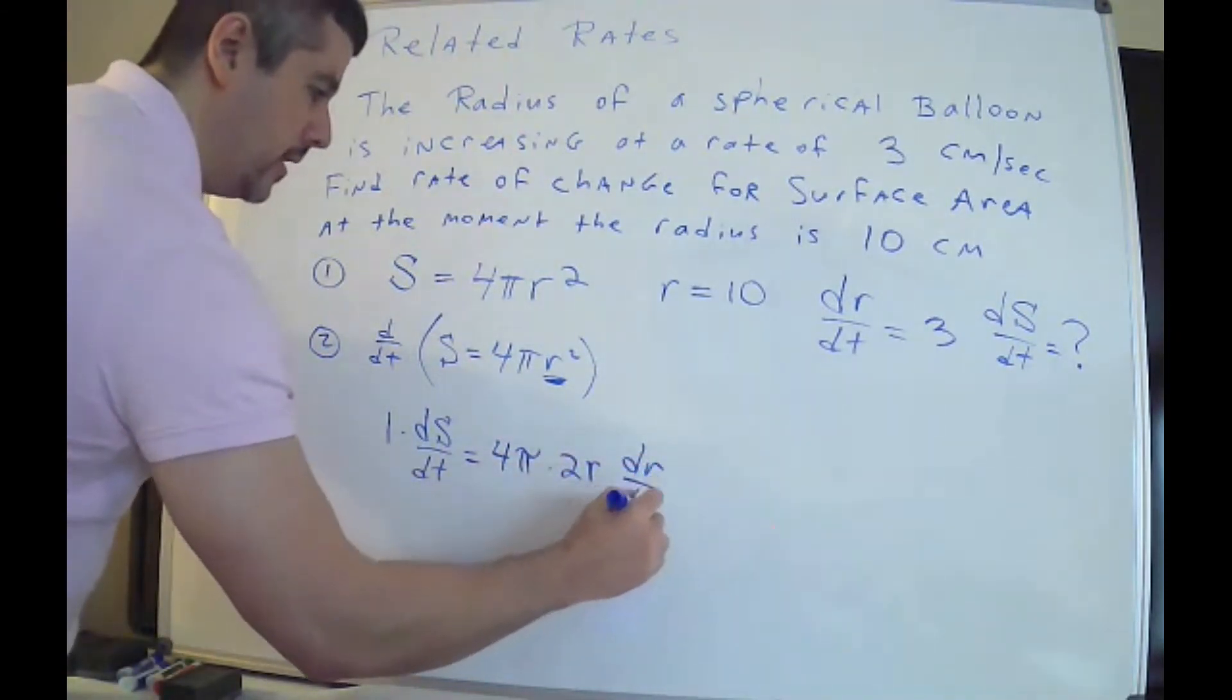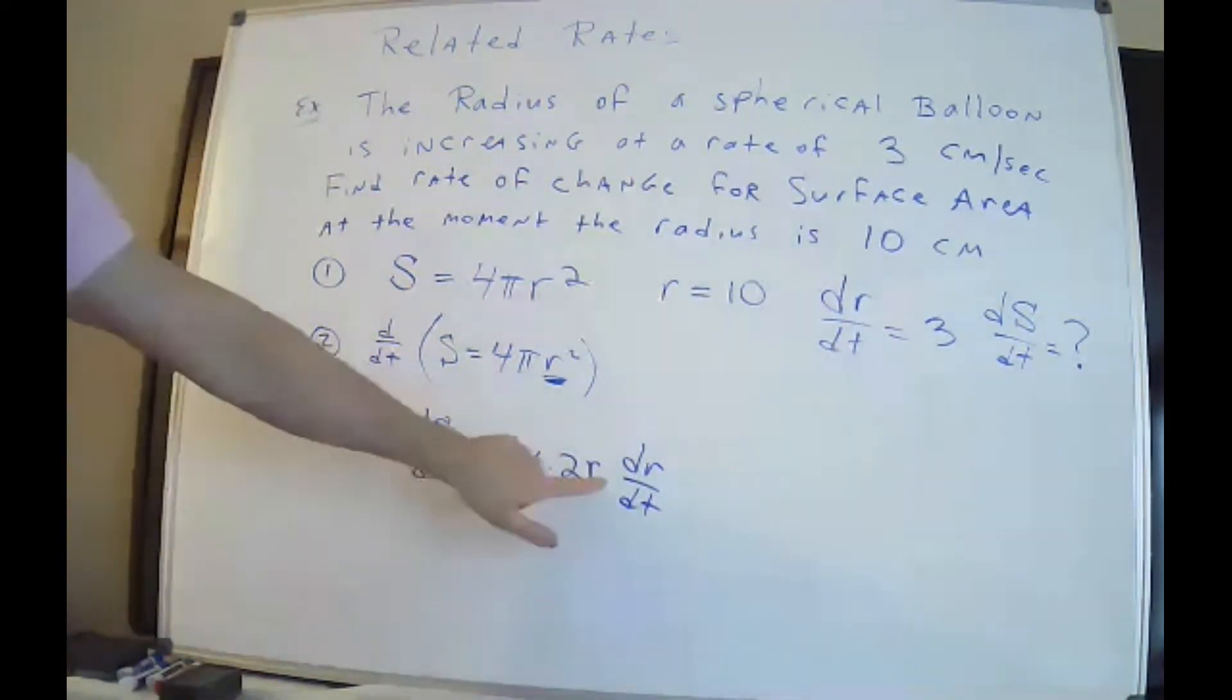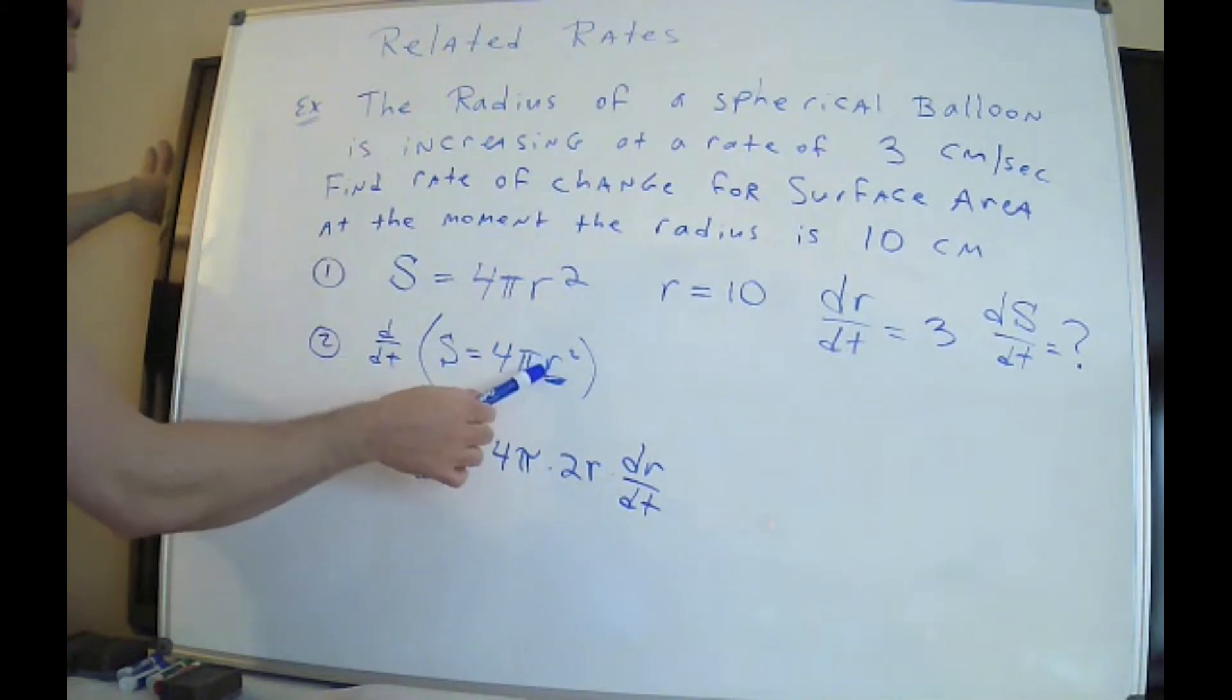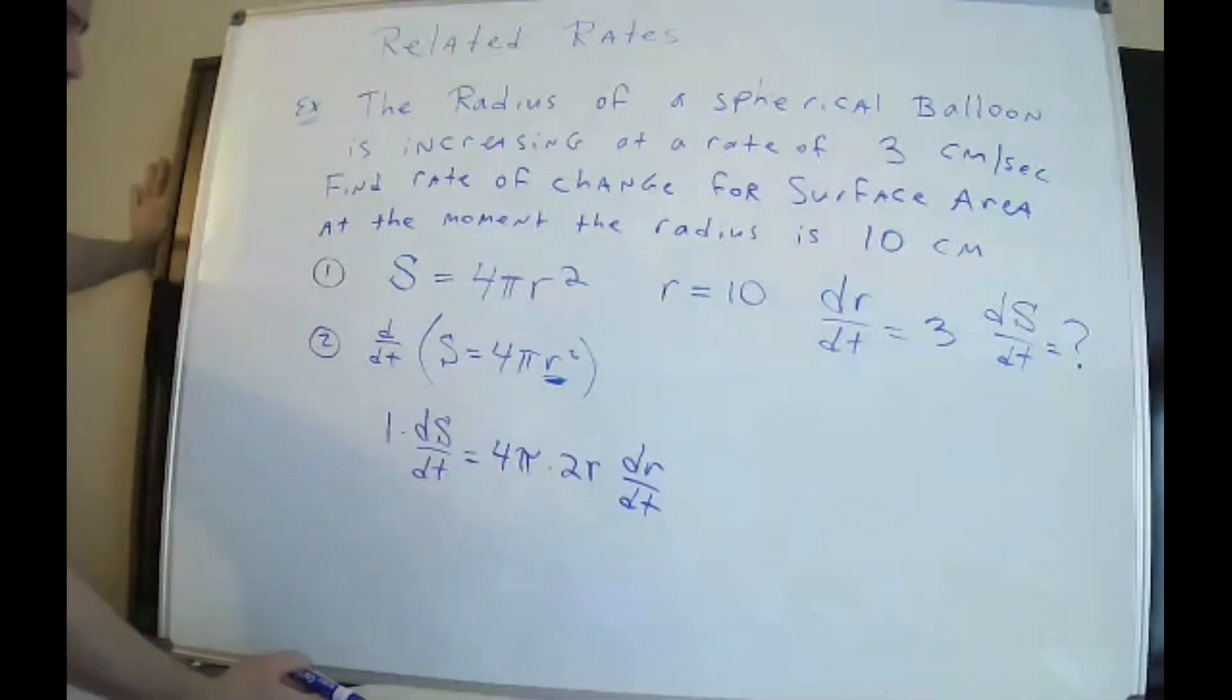It's in front as a constant. So the derivative of r² is 2r times dr/dt. Where is this coming from? Implicit differentiation. Whenever you take the derivative of any of these things, you're going to get d of that letter over dt. So I took the derivative of S, I got dS/dt. I took the derivative of r, I got dr/dt. And r², the derivative of r² is 2r. So this is what you get when you take the derivative with respect to t.